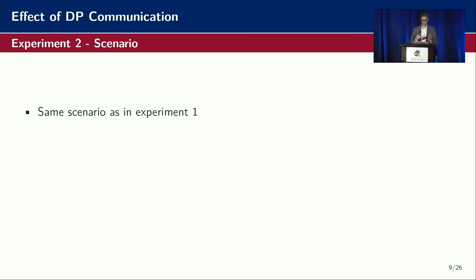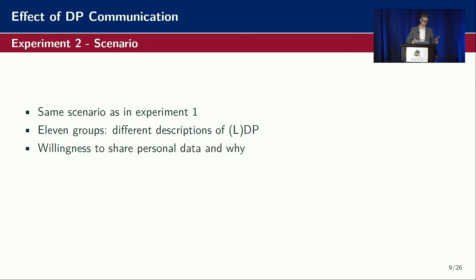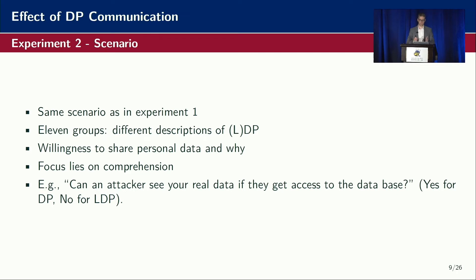For the second experiment, it was the same scenario — you download a health app requiring sensitive information. In line with the original study, we had 11 different descriptions of global and local differential privacy to find out which descriptions showed the greatest effect on willingness to share data, but also on understanding and comprehension of differential privacy. Participants were first asked whether they want to share data and why, and then — more importantly — had to answer five comprehension questions. An example: can an attacker see your real data if they get access to the database?